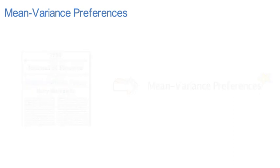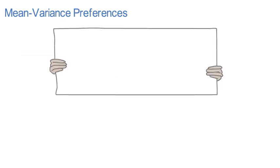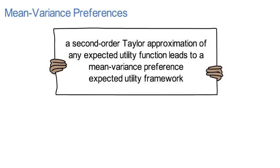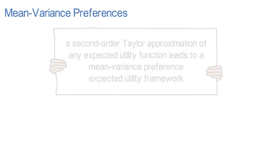In 1979, Markowitz and Levy show in a research paper that a second-order Taylor approximation of any expected utility function leads to a mean-variance preference expected utility framework.